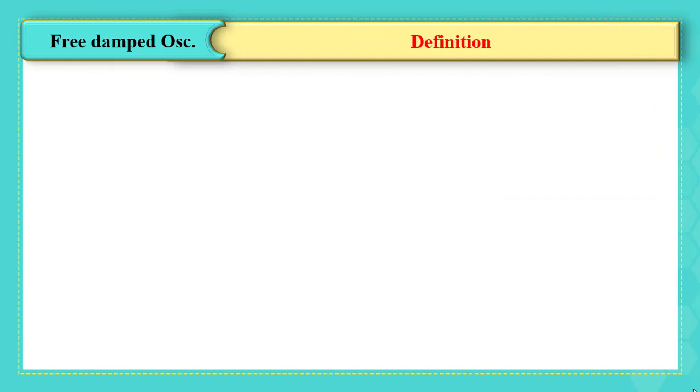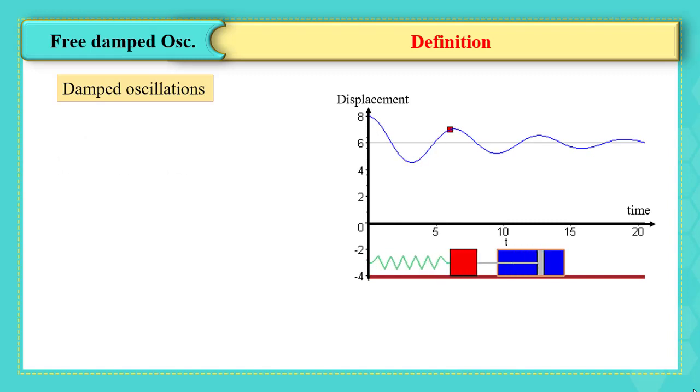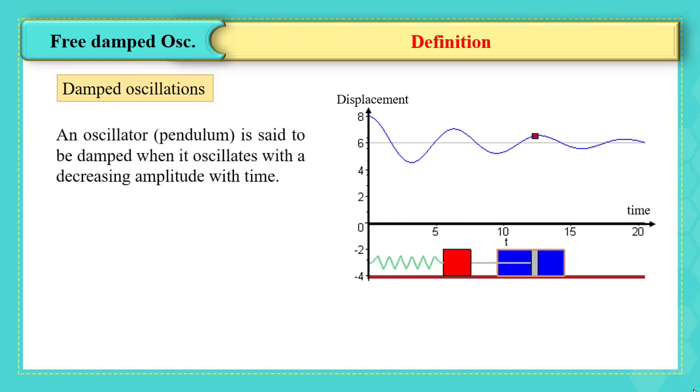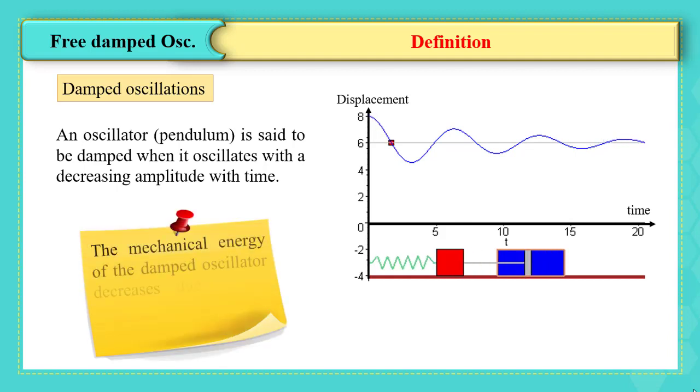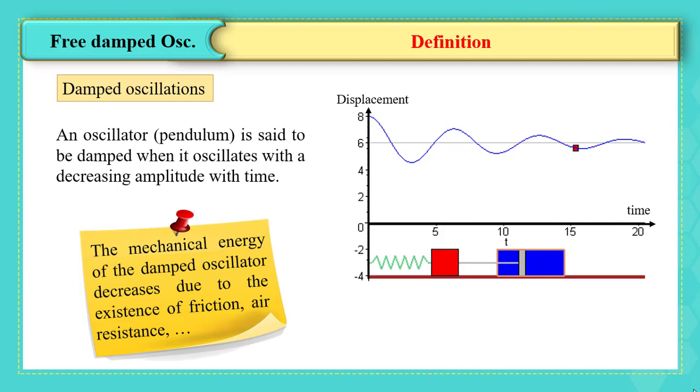Now, what is free damped oscillation? An oscillator, like the pendulum, is said to be damped when it oscillates with a decreasing amplitude with time. The mechanical energy of the damped oscillator decreases due to the existence of a friction, a resistance, etc.